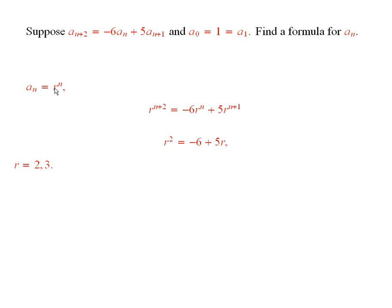So we try a sub n equals r to the n, and from the recurrence relation that says that r to the n plus 2 is equal to minus 6 times r to the n plus 5 times r to the n plus 1.